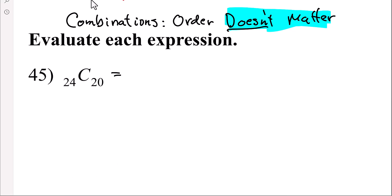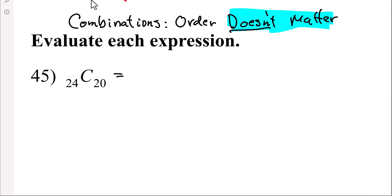Here's the mathematical setup when order doesn't matter. You take the total, 24 factorial. You still are going to do the difference, so 24 subtract 20 factorial in parentheses factorial. Then you're going to take that, so this is n, this is r. You're going to take that 20 and do 20 factorial. So now what you have is 24 factorial over 4 factorial times 20 factorial.